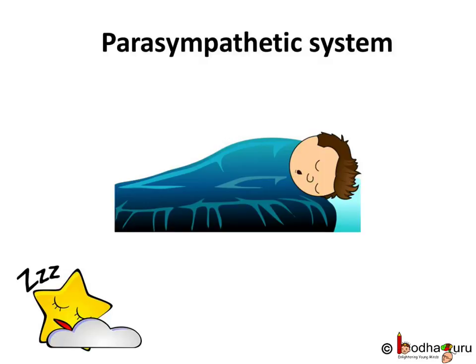Certain nerves of the autonomous nervous system regulate organ and gland functions during rest. These nerves form the parasympathetic system, which is formed by the nerves arising from the ganglia of the brain and the posterior part of the spinal cord. This system is sometimes called the rest and digest system, because the parasympathetic system conserves energy as it slows the heart rate, increases intestinal and gland activity, and relaxes sphincter muscles in the gastrointestinal tract.